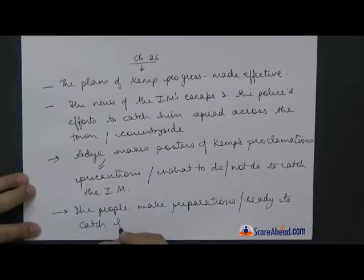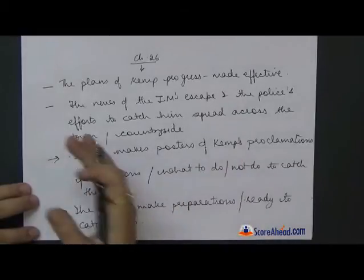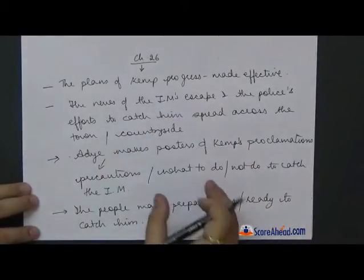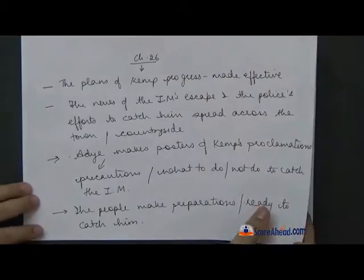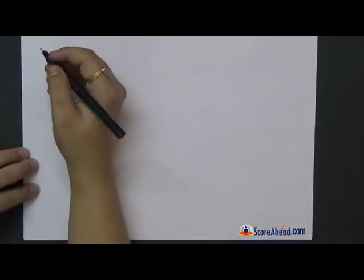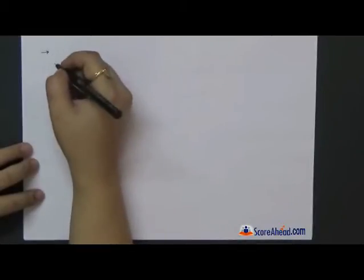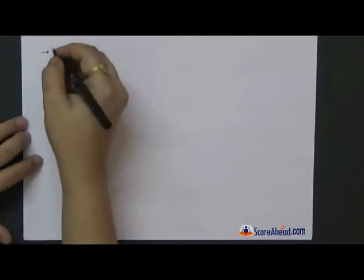This person, about whom until a day before it might have been just a story or gossip, has now become a very dangerous reality for the people of Burdock because the police and Dr. Kemp are involved. The people are absolutely ready to catch him. As the novel has progressed, the author has made sure the reader understands why the people hate him so much, and now they are ready to catch this man whom they consider a big danger to their lives.